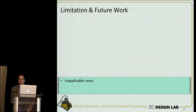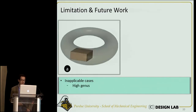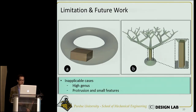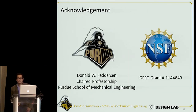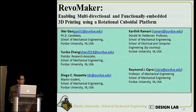The limitation of RevoMaker is that the cubitization algorithm does not work well for models with high genus numbers, protrusions, or small features — it cannot generate a valid cubitization to partition the geometry. We would like to address these problems in future work. This work is partially supported by Purdue University and NSF. Thank you for your attention, and welcome your questions.